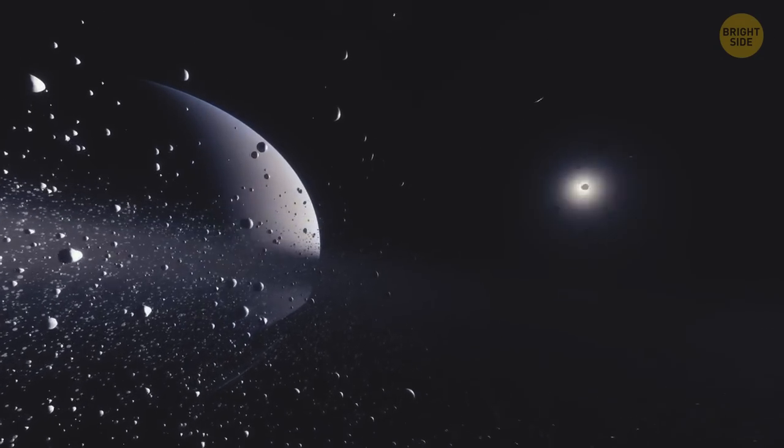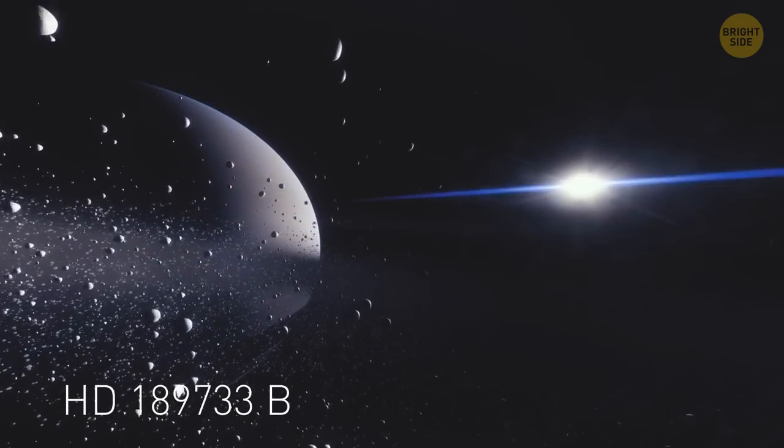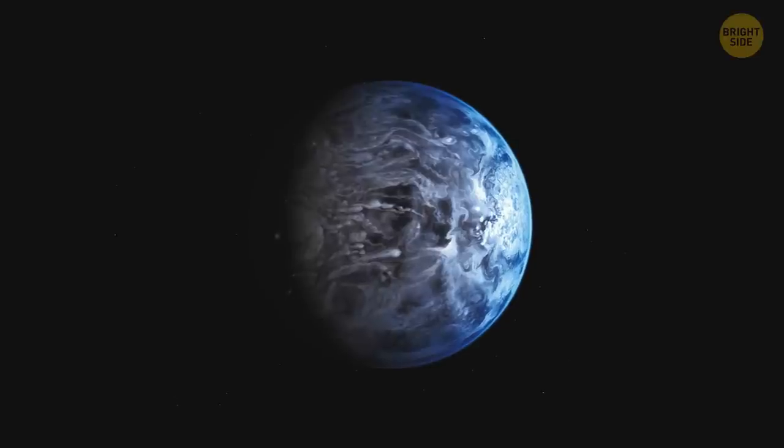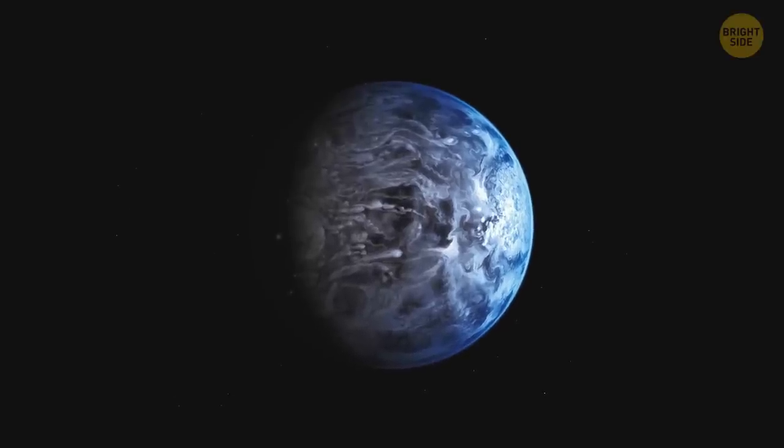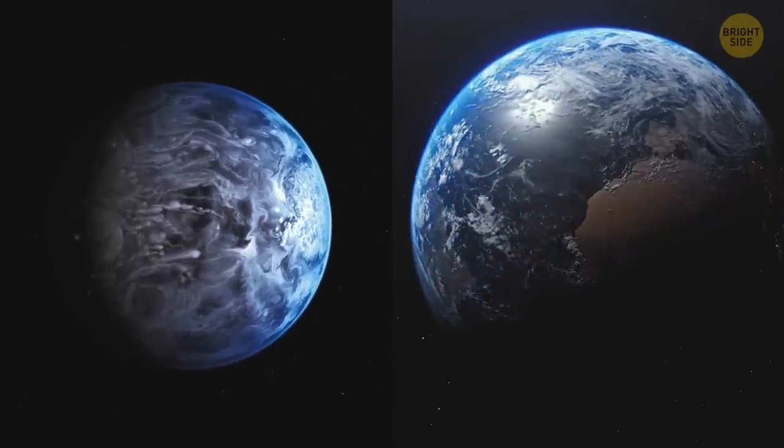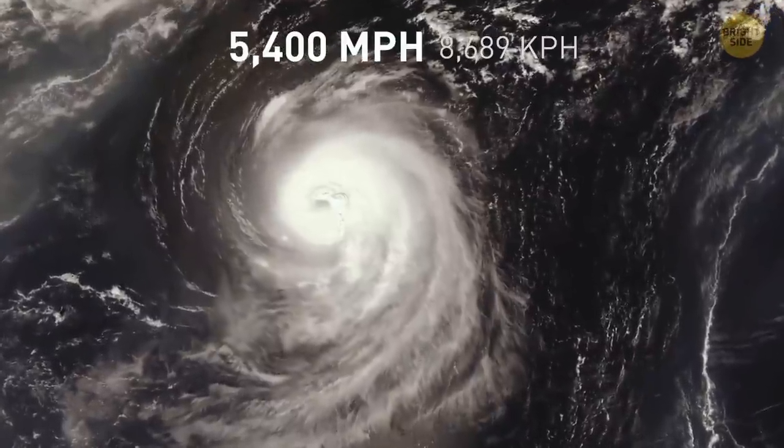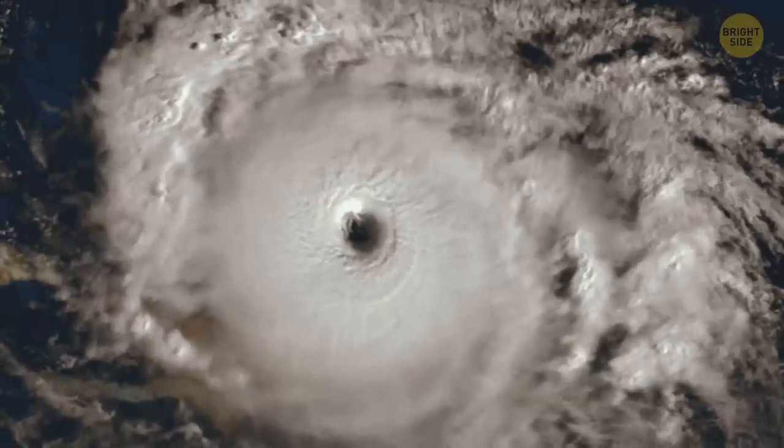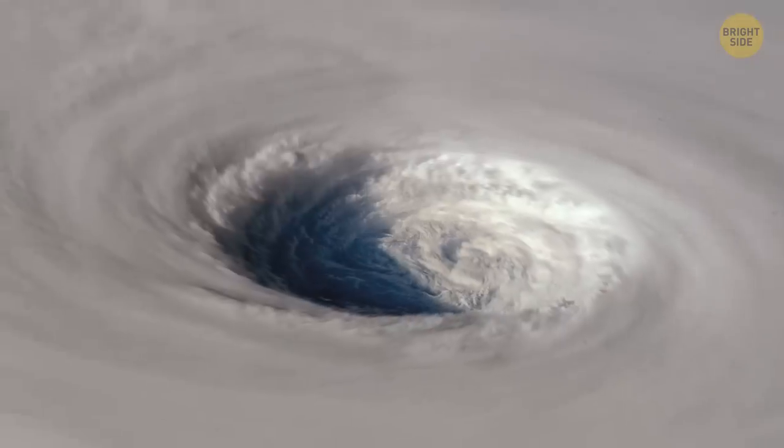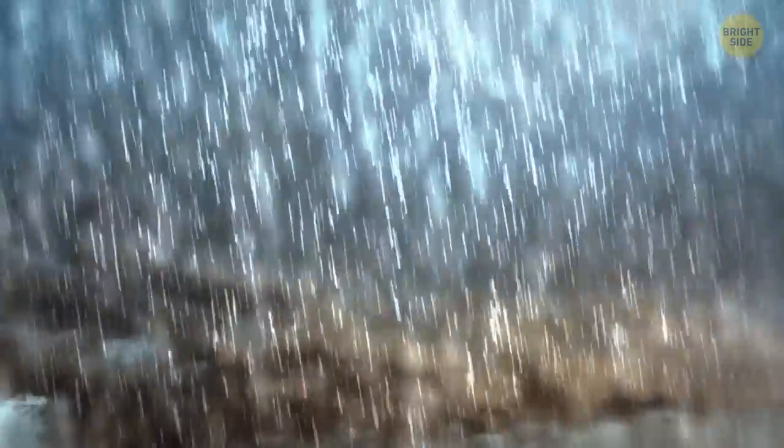Bright blue exoplanet HD 189733b looks peaceful and eerily familiar. Doesn't it resemble Earth? But this appearance conceals the planet's terrifying nature. There, the winds blow at 5,400 miles per hour. It's seven times the speed of sound. But that's not the worst. It rains glass, sideways, in this scorching, hot world.